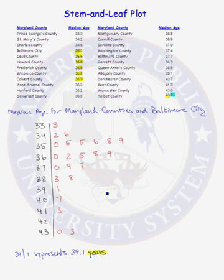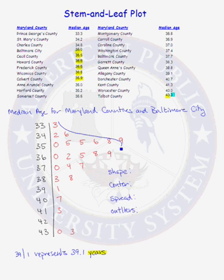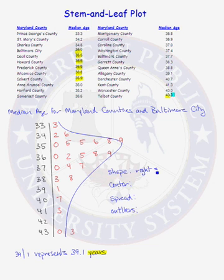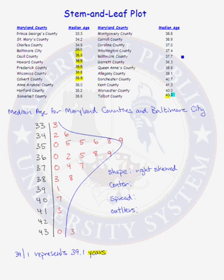Now that the stem and leaf plot is complete, we want to use that graphical representation to describe the data distribution shape, its center, its spread, and whether there are outliers. We can clearly see from our stem and leaf plot that the data distribution for the median age of the counties in Maryland is right skewed. If you go back and watch the dot plot video, you'll see we used the exact same data set there, and it was much more difficult to see the shape of the data distribution compared to the stem and leaf plot.